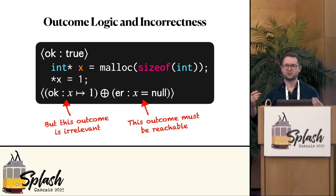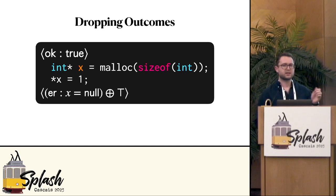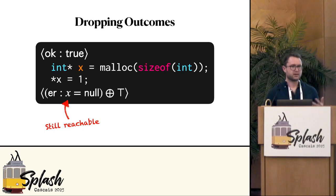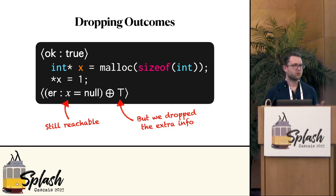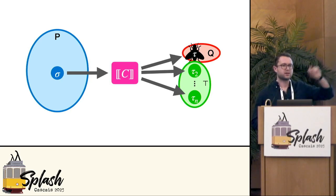This is the under-approximation I was alluding to earlier. What we can do is rearrange the postcondition: we drop the okay outcome and replace it with true. True is an assertion that describes any set of states. Now what we're saying is: the error is still reachable, but maybe something else happens too — and that true is vacuously satisfied by any outcome, so we don't really have to keep examining the rest of the program. Pictorially, in the postcondition we draw a circle around the bug (call that Q) and then draw another circle around everything else, which is vacuously satisfied by true.